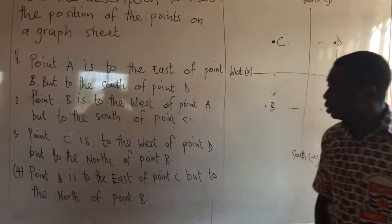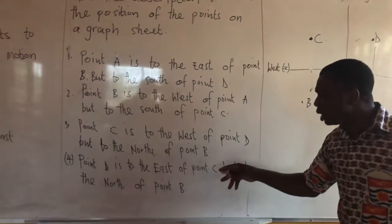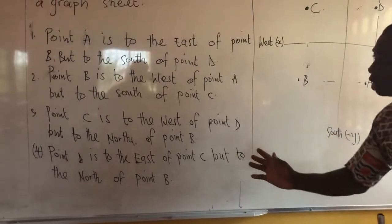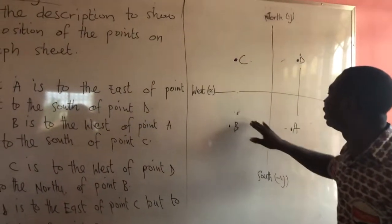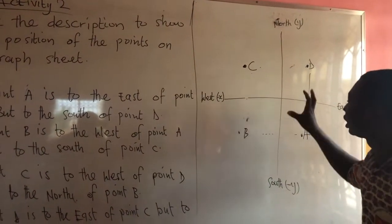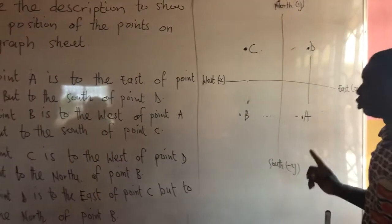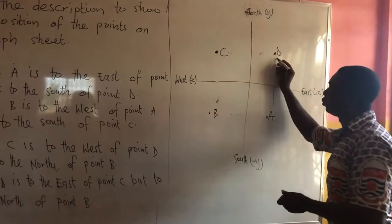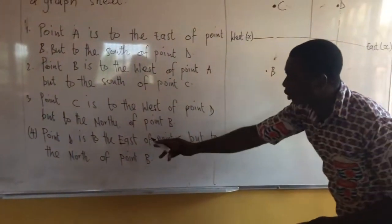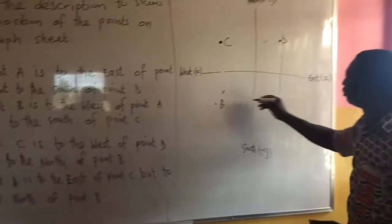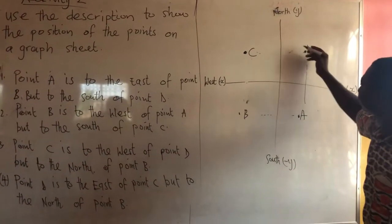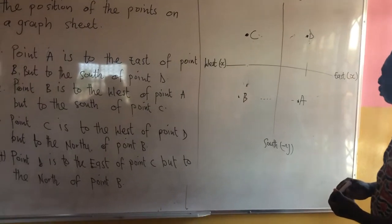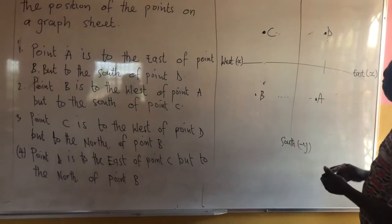And the last one. Point D is to the east of point C, but to the north of point D. So, they are given a description and we have to use it to draw our points on the graph sheet using the cardinal point. So, point D is to the east of point C — to the east of point C — and we see that D is already there, to the east side of it.